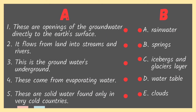Let's check your answers. Number 1: These are the openings of the groundwater directly to the Earth's surface — the answer is springs. Number 2: It flows from land into streams and rivers — the answer is letter A, rainwater. Number 3: This is the groundwater underground — the answer is letter D, water table. Number 4: These come from evaporating water — the answer is letter E, clouds. Number 5: These are solid water found only in very cold countries — the answer is letter C. You'll get a perfect score — great job!